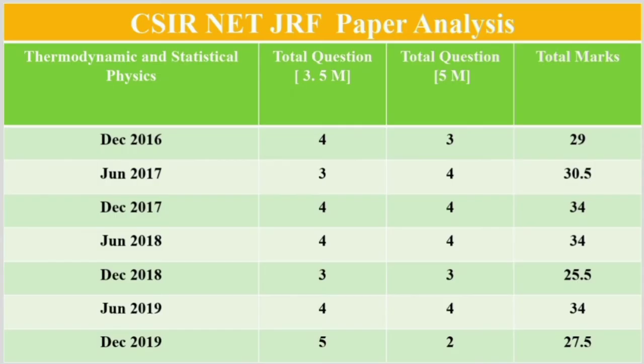Now we will see the weightage of questions in CSIR NET examinations. This analysis is done from December 2016 to December 2019. You can see that the 3.5 marks questions are minimum three and maximum five. If you see 5 marks questions, minimum questions means the least number of questions is two and the highest is four. So as a whole you can see 27 to 30 marks questions are there from thermodynamics and statistical.